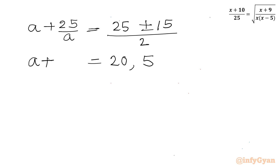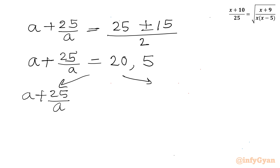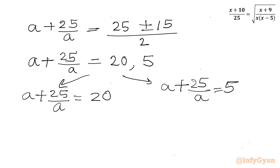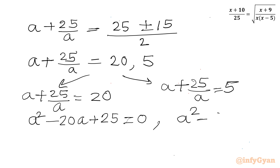We write these two equations separately: first, a + 25/a = 20, and second, a + 25/a = 5. Multiplying both sides by a gives us the first quadratic: a² minus 20a + 25 = 0, and the second quadratic: a² minus 5a + 25 = 0.